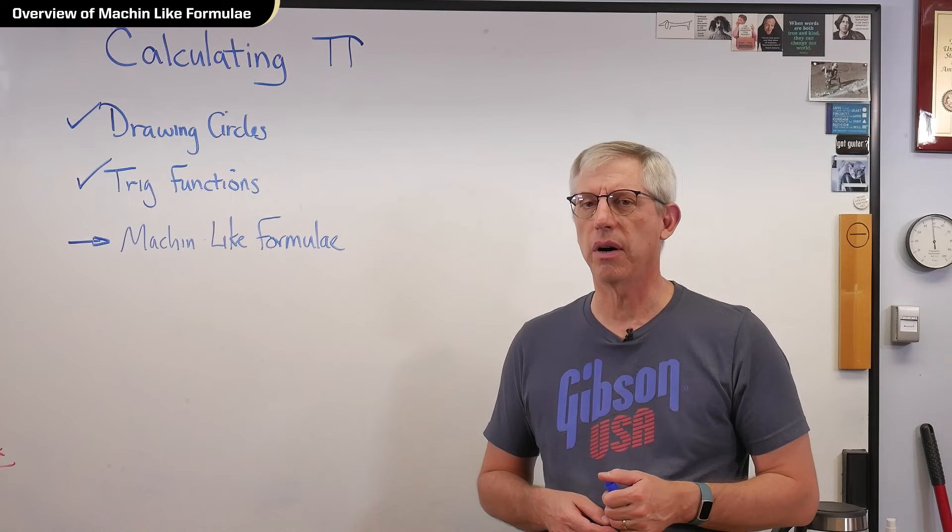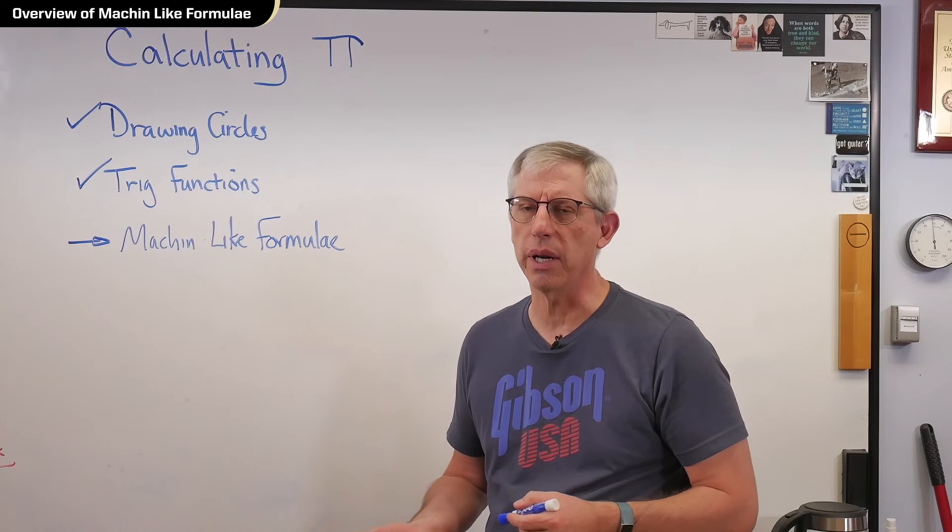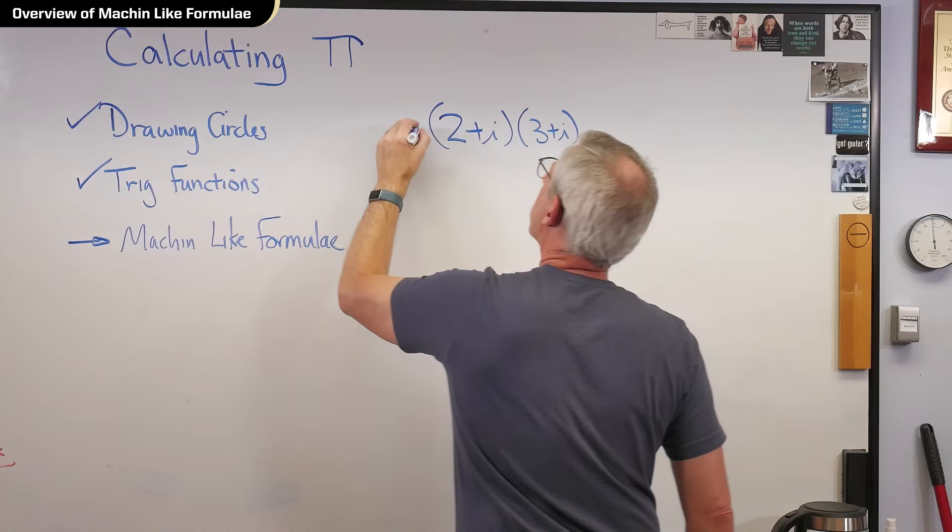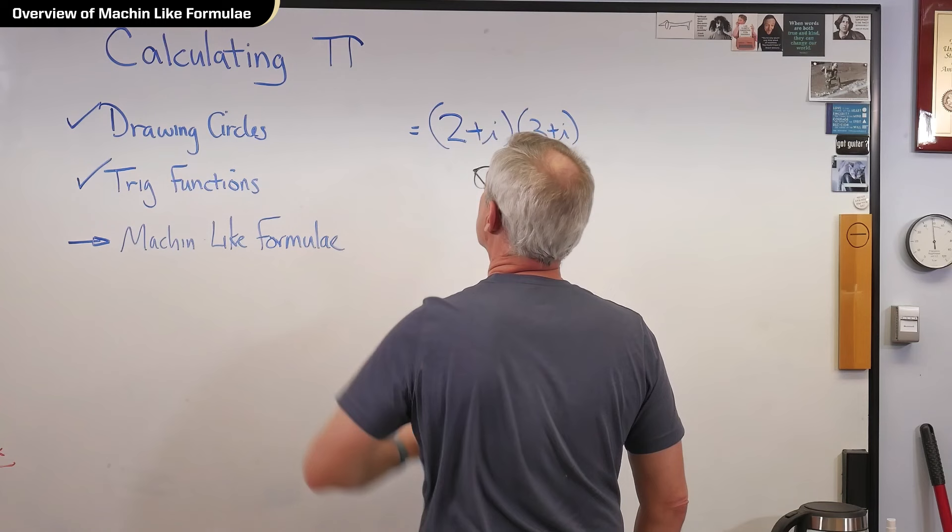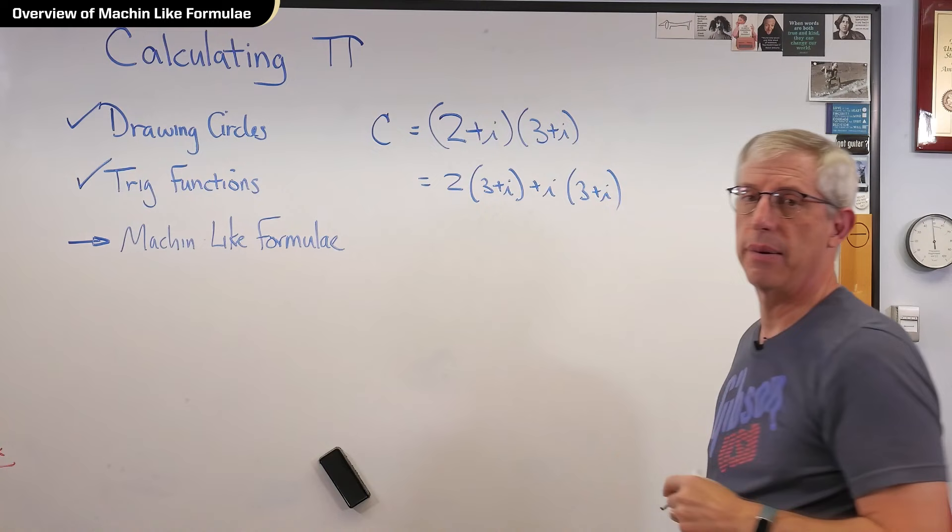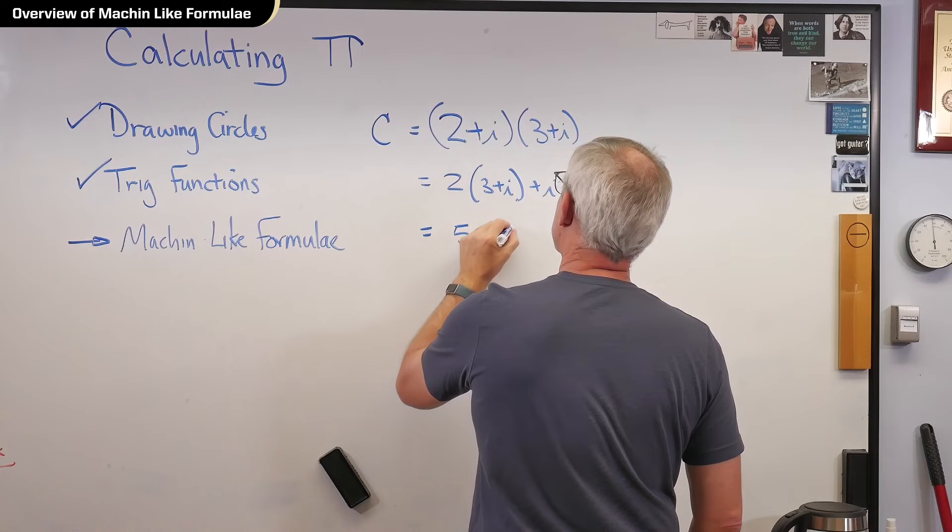Now here's Machin's insight, and again, I hope I'm getting his name right. He's English, so it's probably Machin. Let's just take these two numbers, 3 plus i, and I'll call that c. All right, let's just go ahead and multiply this out without being too worried about where we're going yet. We've done this before. We know how to do this. If you work this out, this turns out to be 5 plus 5i.